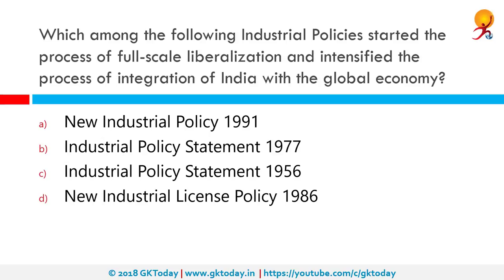Which among the following industrial policies started the process of full-scale liberalization and intensified the process of integration of India with the global economy? On July 24, 1991, the Government of India announced its new industrial policy with the aim of correcting distortions and weaknesses in the industrial structure, raising industrial efficiency to international level and accelerating industrial growth. This is the new industrial policy of 1991.